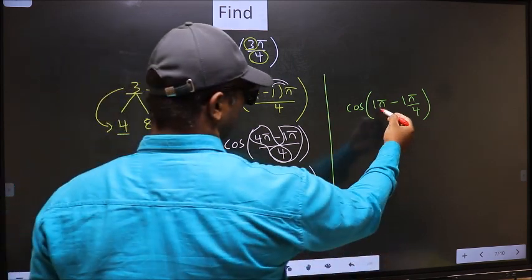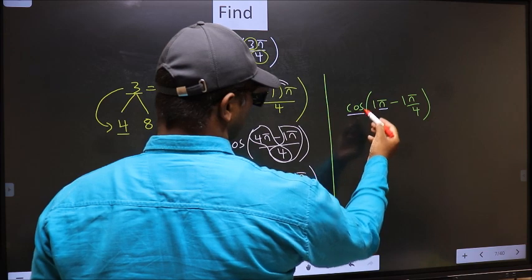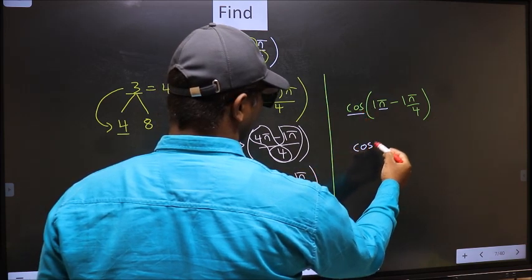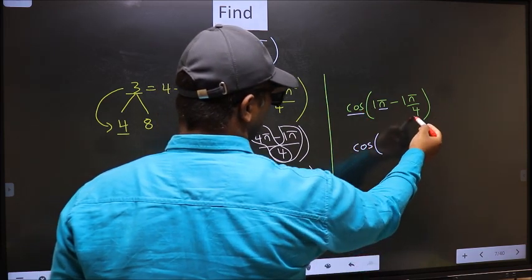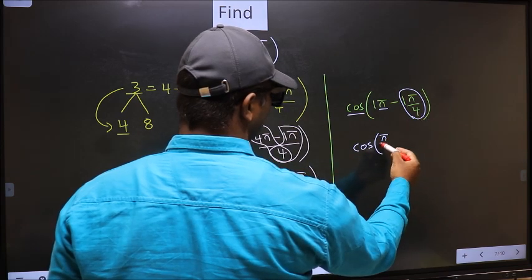Next, here we have π. So cos is not going to change. It will remain cos. And inside, we get this angle, π/4.